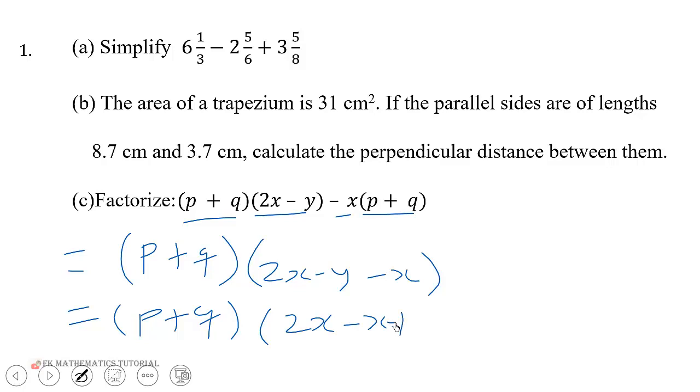Remember that when we swap the positions, we don't change the sign, the sign remains the same, so minus y. So 2x minus x gives us x minus y, then we have (p + q)(x - y).